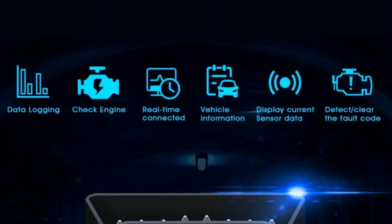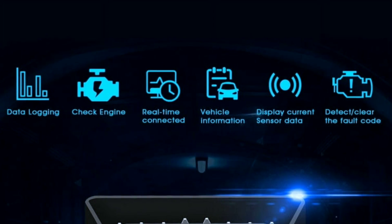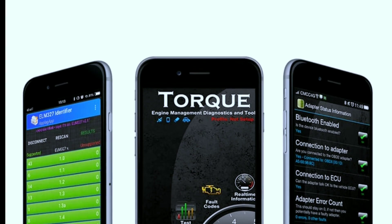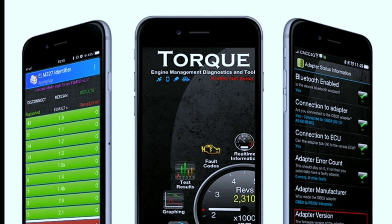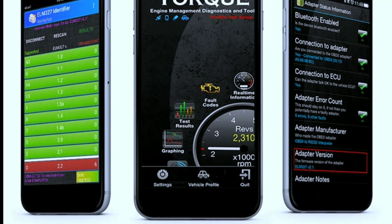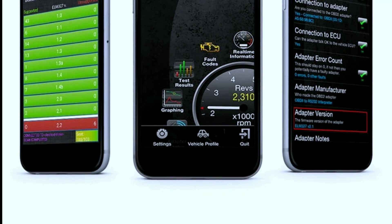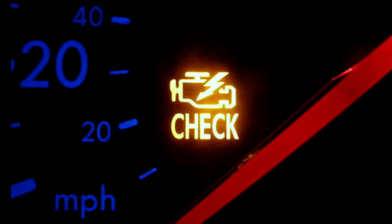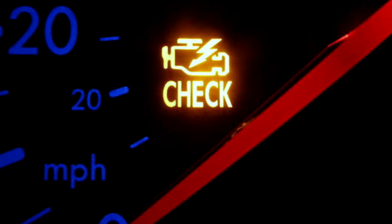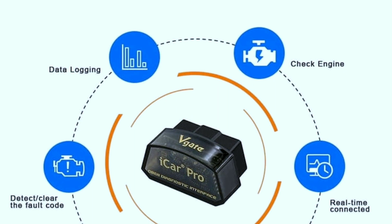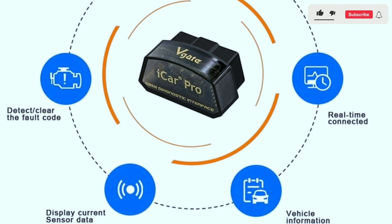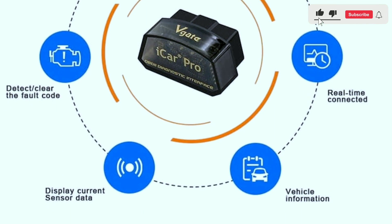Real-time data: this device can read and display real-time data about your vehicle, such as engine RPM, vehicle speed, coolant temperature, and more. It's like having a digital dashboard right on your smartphone or tablet. Check engine light diagnostics: if you have a pesky check engine light on your dashboard, the Vagate eCar Pro can help you diagnose the issue by reading and clearing diagnostic trouble codes, or DTCs.